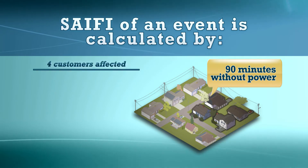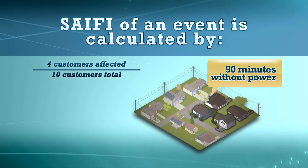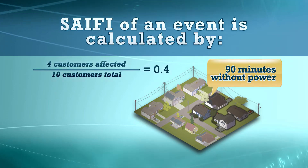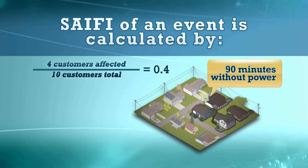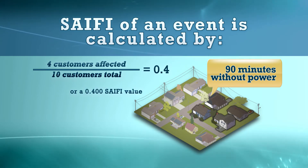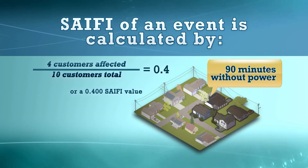Suppose in a small grid of 10 people, a tree falls on a power line and causes four people to lose power for 90 minutes. In this instance, four customers were affected out of ten customers total, and we get a value of 0.4, or a 0.400 SAIFI value.